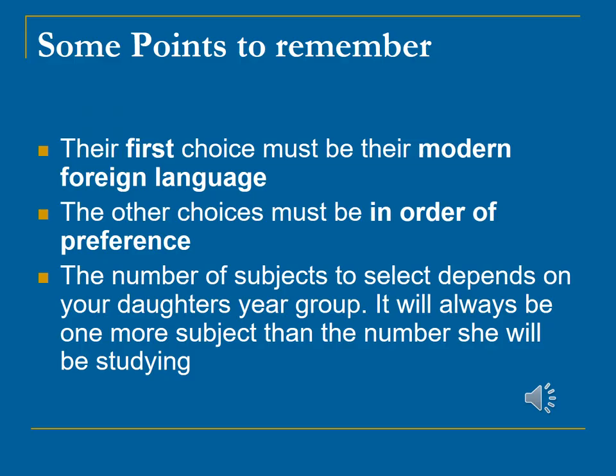As highlighted here, the modern foreign language needs to be inputted into the first box. If your daughter is not studying a foreign language, then she fills in all her subjects in order of preference until all of the boxes are filled. Order of preference is essential as this is how the computer knows to assign the subjects. Incoming first years select a language and another three subjects. Fifth years select a language and another four subjects. We are launching an updated transition year programme in September 2025, so the details for subject choice for the transition years will be shared at their information evening.